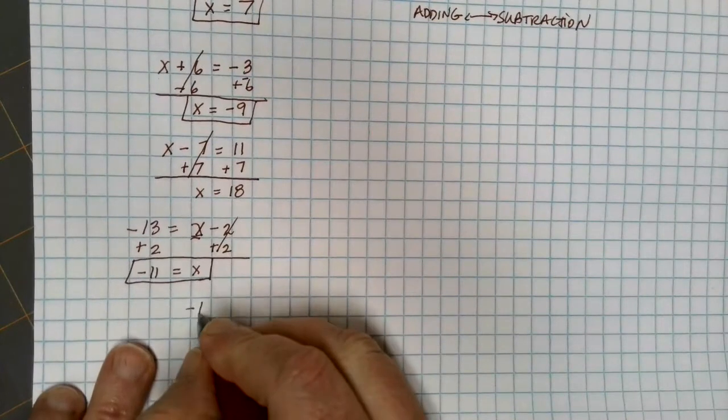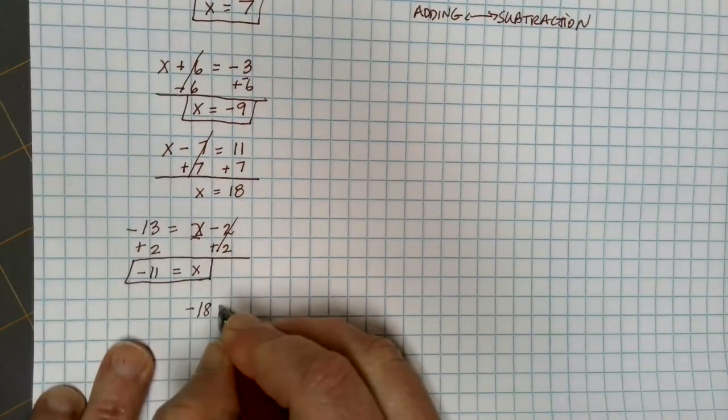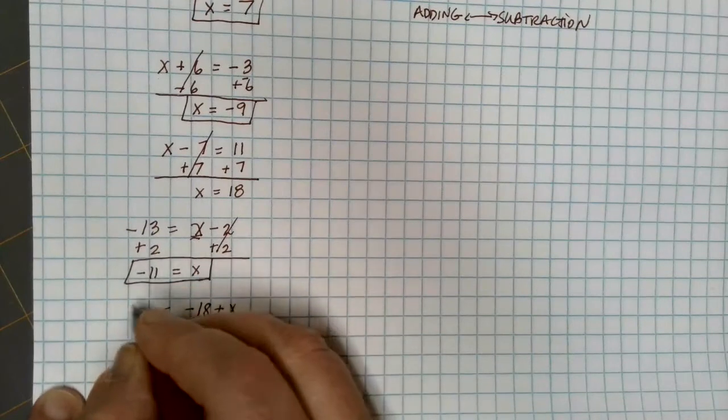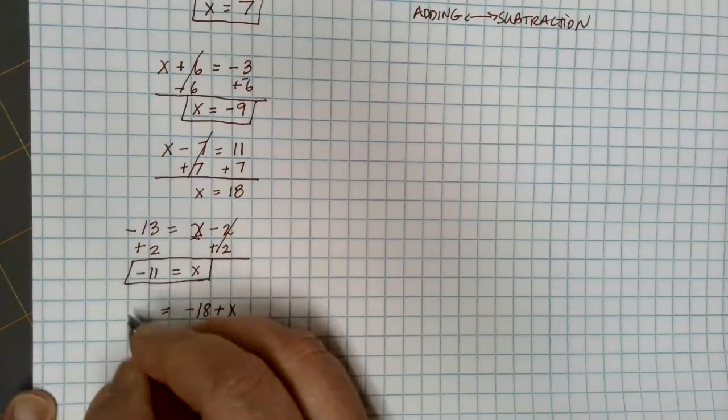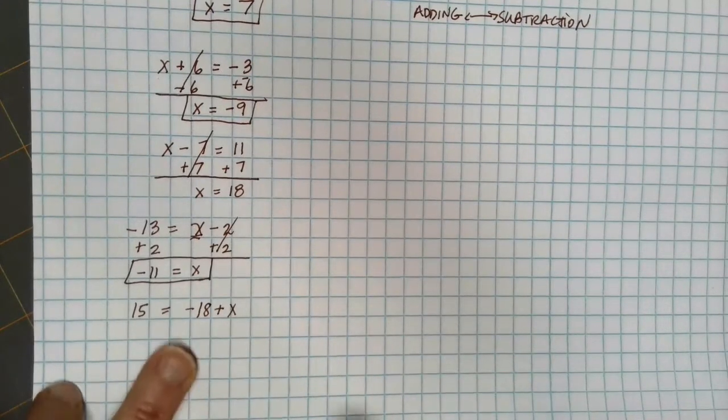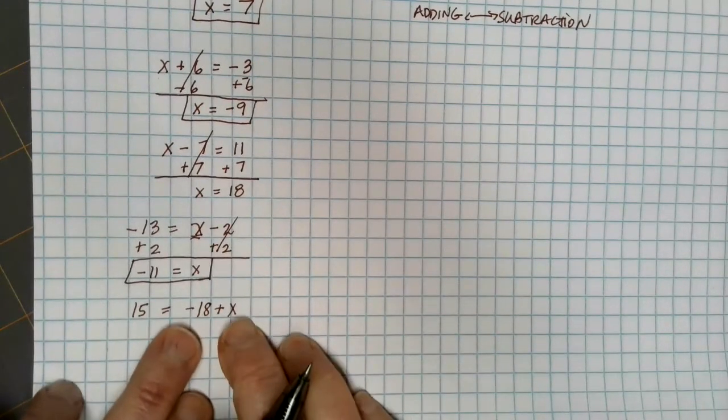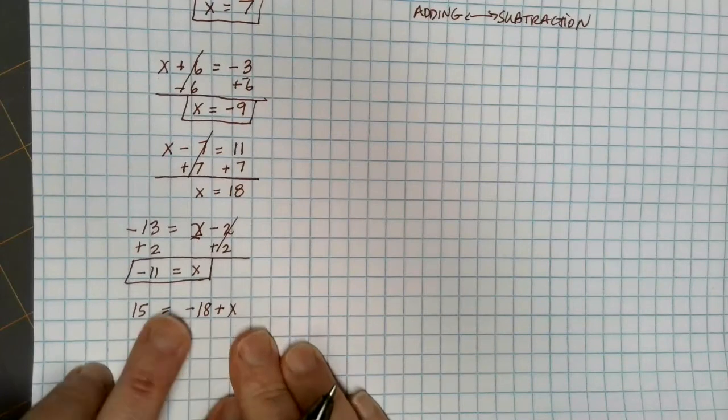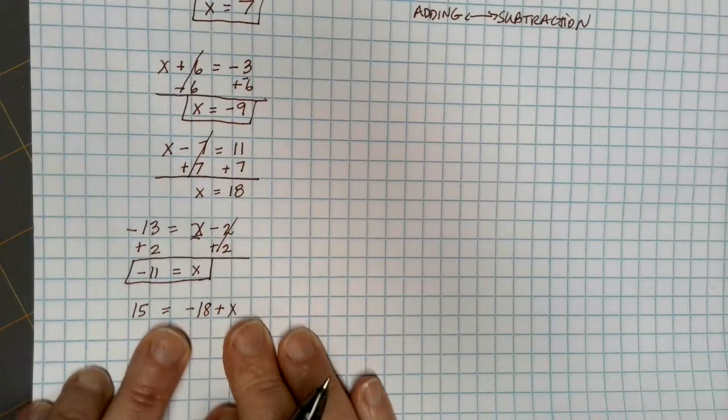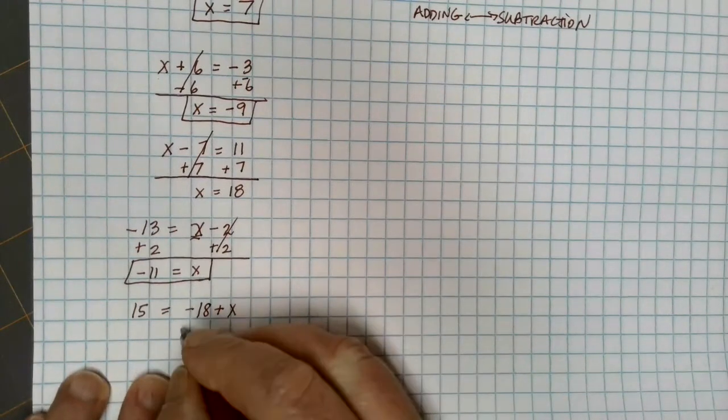In terms of this addition and subtraction set of rules, let's suppose that I have this equation. This is one that a lot of people get confused on because I have my x and I am adding a negative 18 to it. So to get rid of adding a negative 18, I have to subtract a negative 18 from each side.